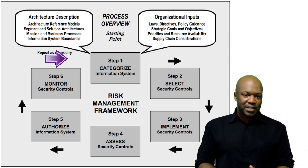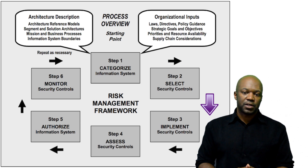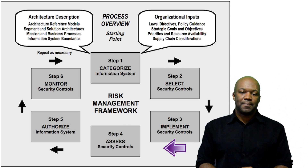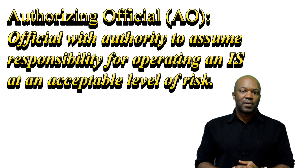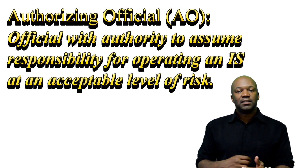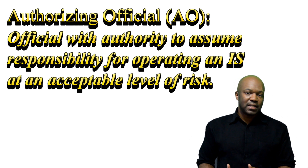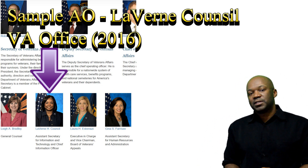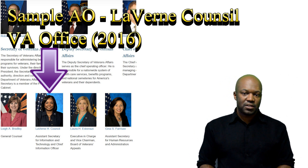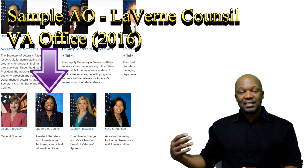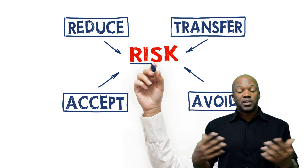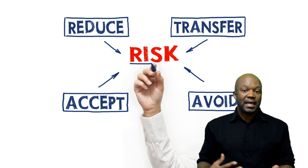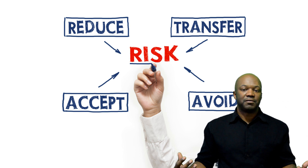Once you've categorized your system, selected your controls, implemented those security controls, and assessed the controls, the next step is authorizing the system. This is done by an authorizing official, who formally documents that they accept the risks that are on the system. This is a very important step because someone has to take responsibility for the risk of the system. They're not going to accept an extreme amount of risk — they want to take a managed risk, and that's where the term risk management comes in: managing risks and accepting a certain level of risk.